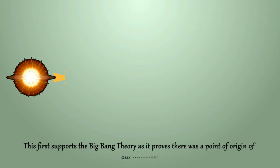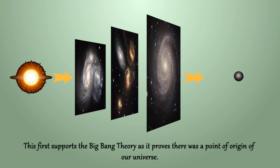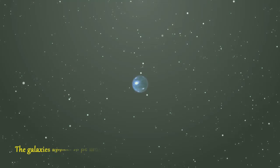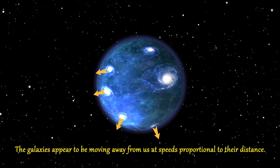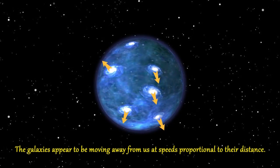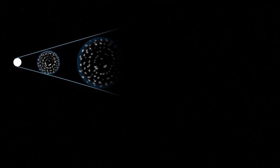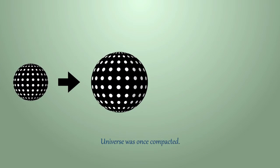This first supports the Big Bang Theory as it proves there was a point of origin of our universe from which galaxies are constantly expanding from. Second, the galaxies appear to be moving away from us at speeds proportional to their distance or Hubble's law, named after Edwin Hubble's discovery and observation in 1929. It supports the expansion of the universe. The universe was once compacted.